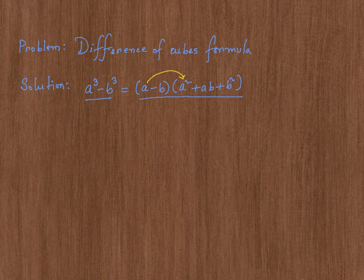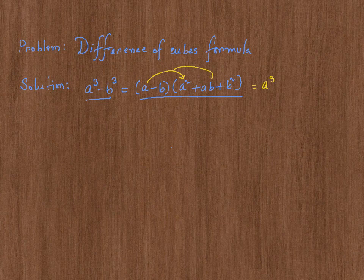So a times a square is going to be a cube. Then a times ab is going to be a square b. Then a times b square is going to be ab square.